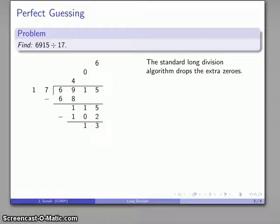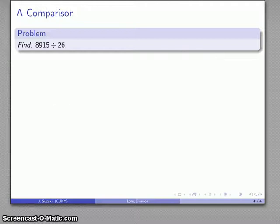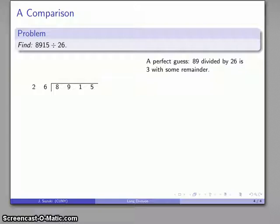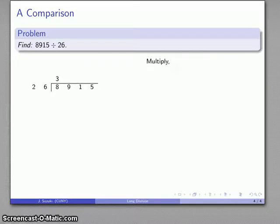Alright, so let's take a look at another division problem: 8915 divided by 26. This time we'll make a comparison of the two methods. So I'll set up my quotient. 26 into 89, I guess perfectly without hesitation every time, that's 3. And in order to get that, 3 times 26 is 78. But in order to get it all the way over here, I need to multiply in fact by 300, and I'll subtract, and here's what I have left.